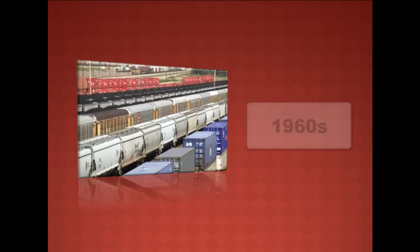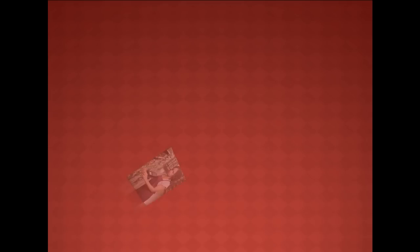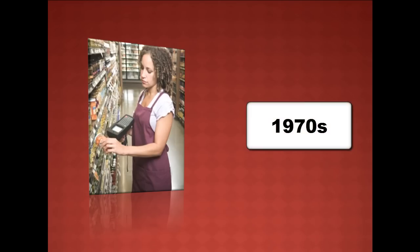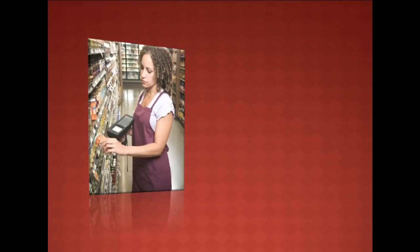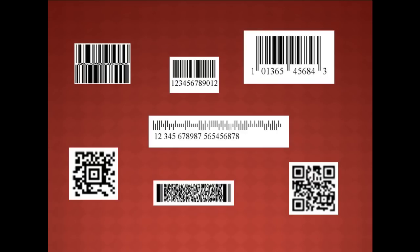The industrial use of barcodes can be traced back as far as the 1960s in some cases as a means to identify railroad cars. In the early 1970s, common linear barcodes such as UPC were used to automate the process of identifying grocery items. Today, barcodes are just about everywhere and are used for identification in almost all fields of business.